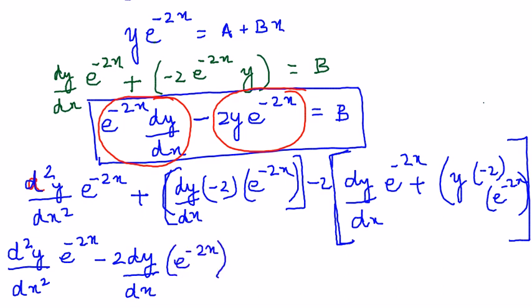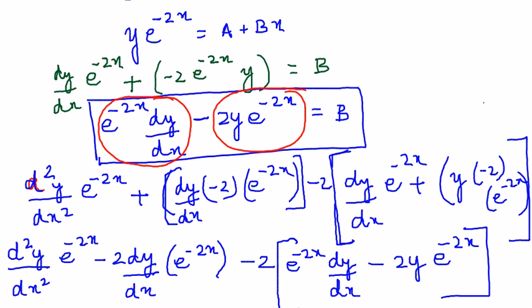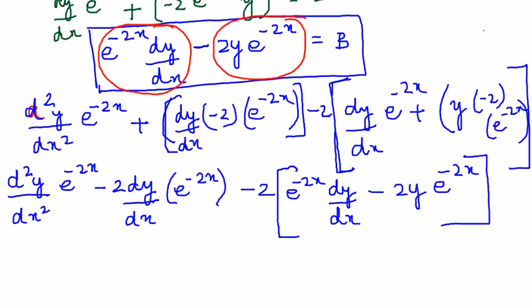The next one will be minus 2 into e power minus 2x dy by dx. I am just rearranging this and writing. Minus 2y into e power minus 2x. And we forgot one main thing: when we differentiate B, it becomes 0.